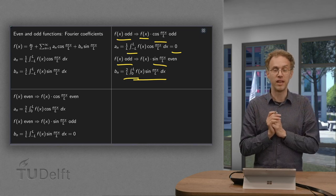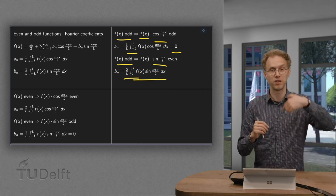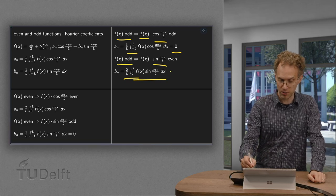So the b_n are non-zero and can compute it by integrating from 0 to l and then twice the integral.